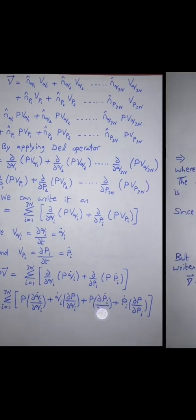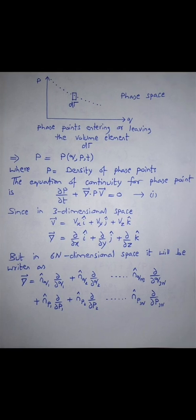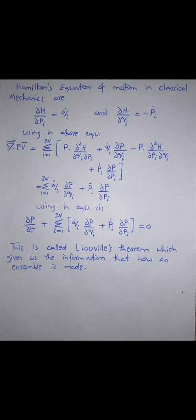Putting this result into the equation of continuity ∂ρ/∂t + ∇·(ρv) = 0, the equation becomes ∂ρ/∂t + Σᵢ₌₁³ᴺ [q̇ᵢ (∂ρ/∂qᵢ) + ṗᵢ (∂ρ/∂pᵢ)] = 0. This is the equation of continuity for phase space of 6N degrees of freedom, describing the behavior of phase points. This equation is called Liouville's theorem, giving us information about how an ensemble is formed. This concludes the first part of Liouville's theorem; the second part will be discussed in the next lecture.